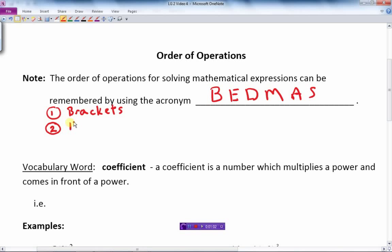Number two, the second letter is E for exponents. That's what we're going to focus on today. The third rule, the third order of doing things, is you do the division and multiplication. They're both basically the same grouping here.